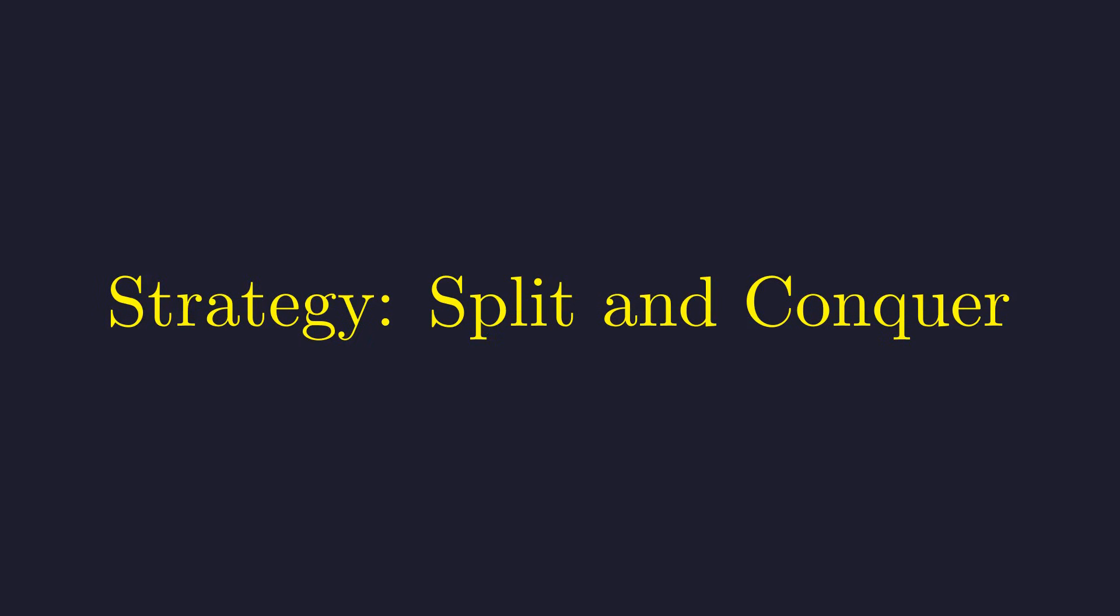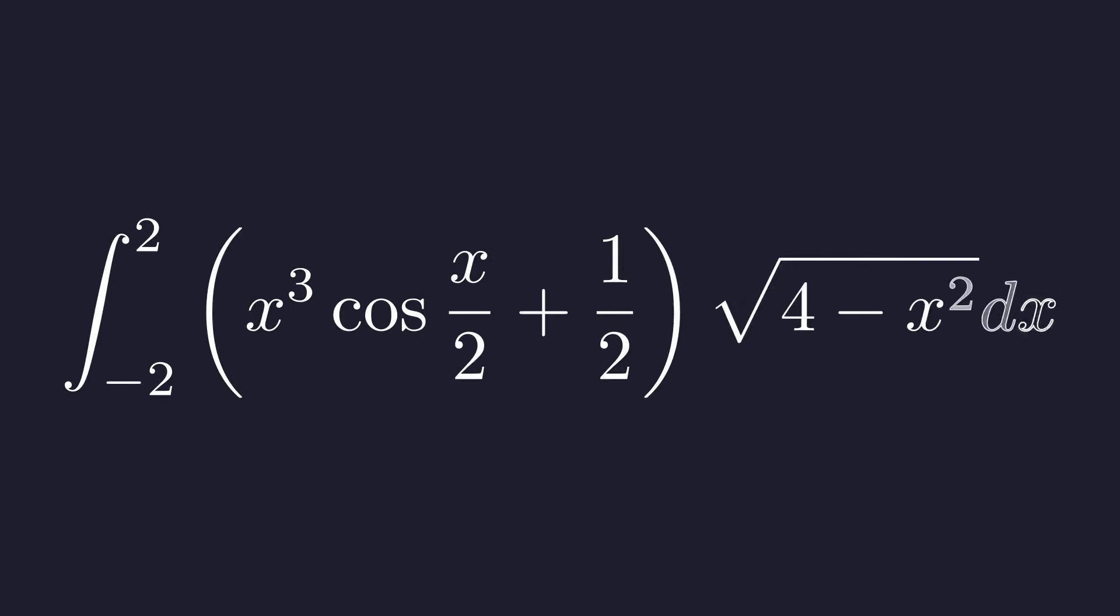The first move is to use some basic properties of integrals to break this down into more manageable pieces. The key is to distribute that square root term across the sum inside the parentheses. Notice this square root term here—we'll multiply it through to each piece inside those parentheses.